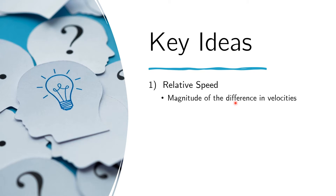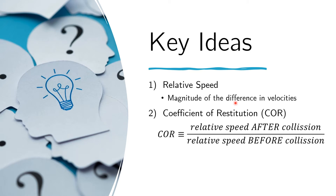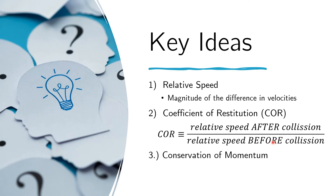We needed to review relative speed because the problem asks us to compute the coefficient of restitution, which we call COR. The coefficient of restitution is defined as the ratio of the relative speeds after and before the collision. To find those speeds, the most useful tool is the law of conservation of momentum, which tells us the relationship of the speeds of the objects right before and right after the collision.